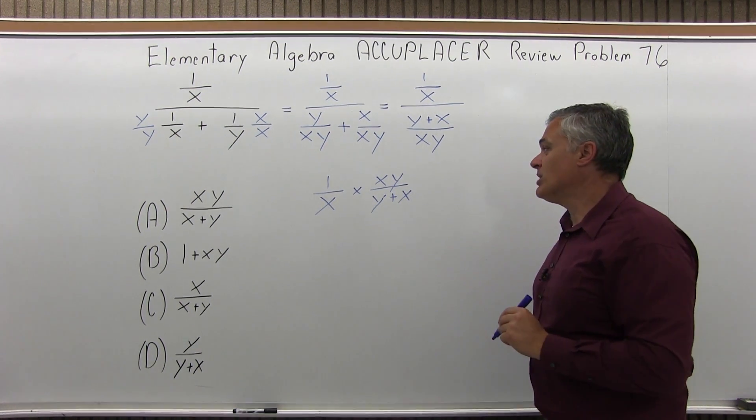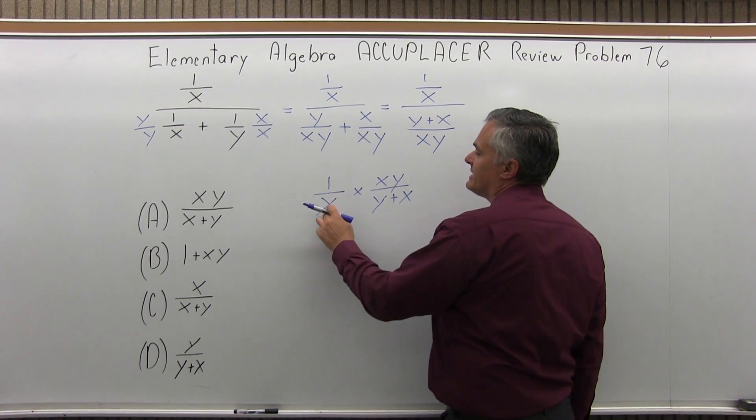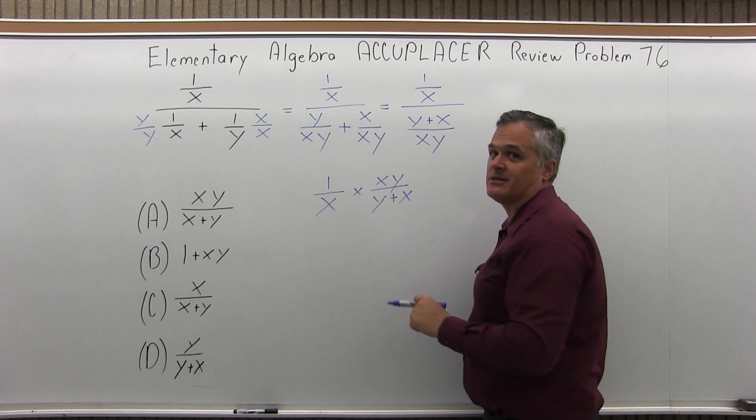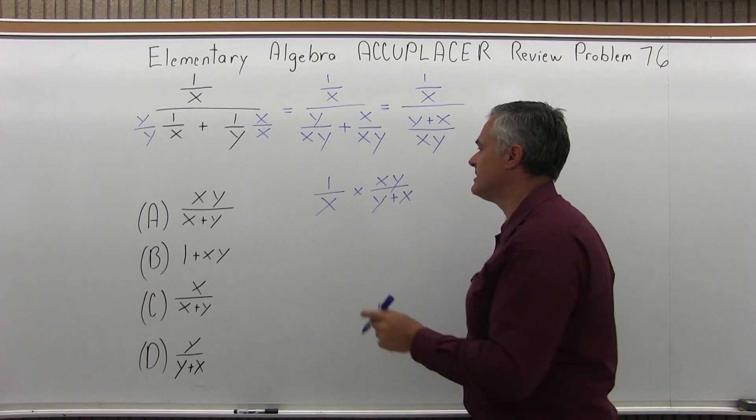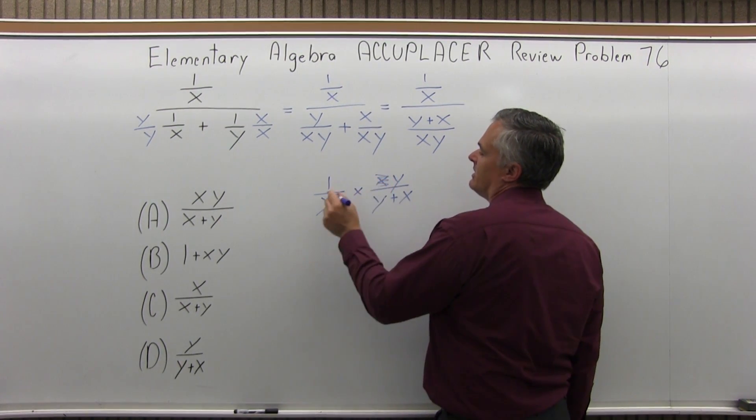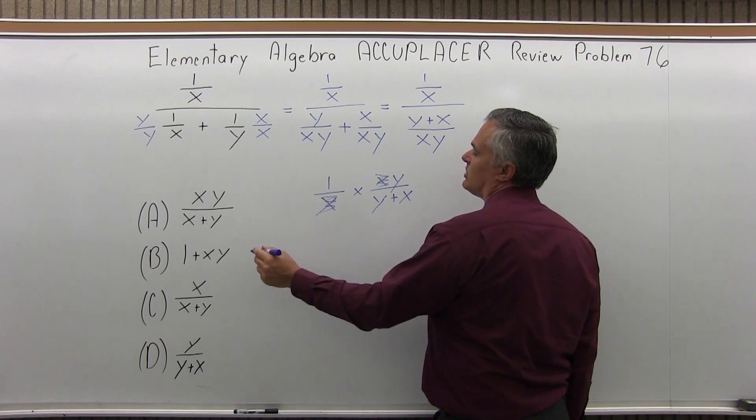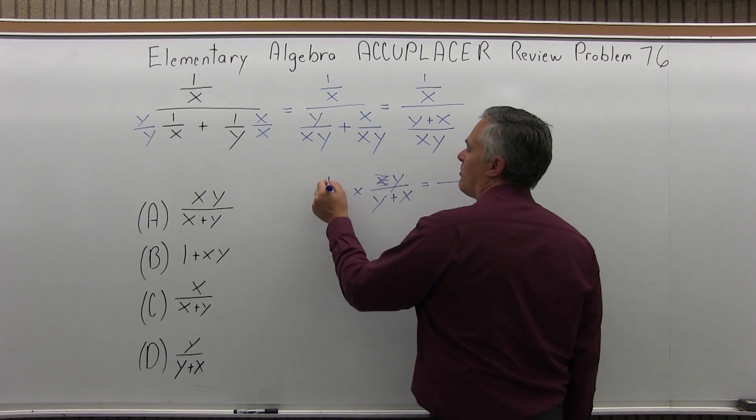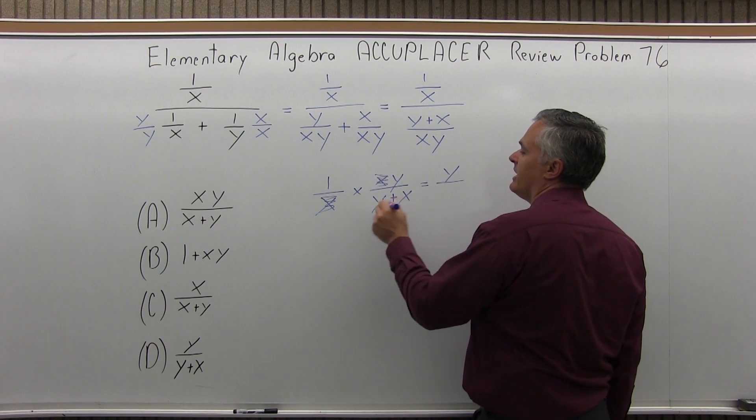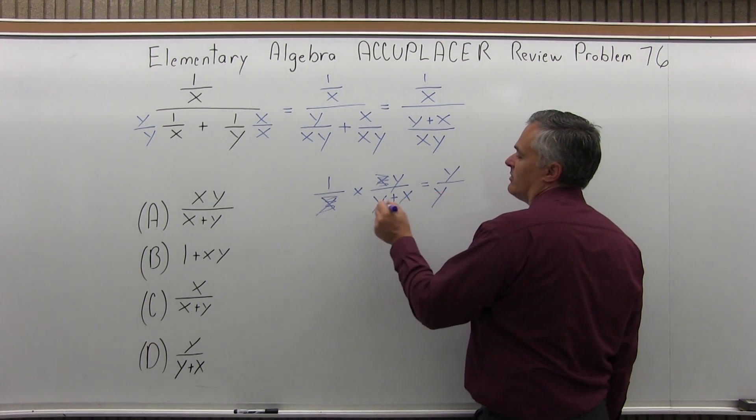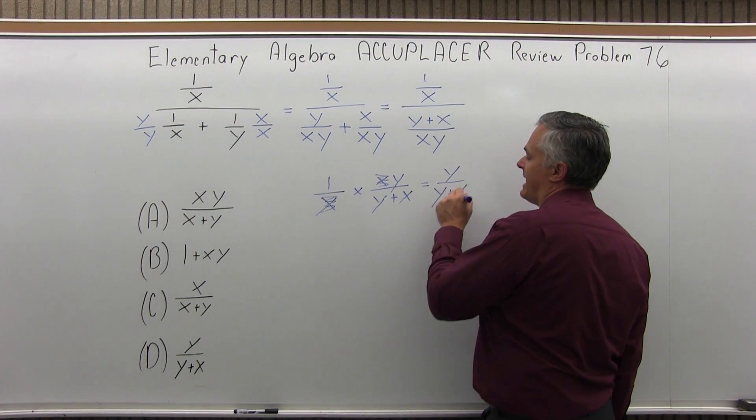Now when I multiply, notice x on the bottom, x on the top, I can cancel these. I can multiply first and cancel, but it's easy to cancel first. So let me get rid of the x in the numerator, x in the denominator. Now what I'm left with on top, one times y is y, and in the denominator, y plus x.